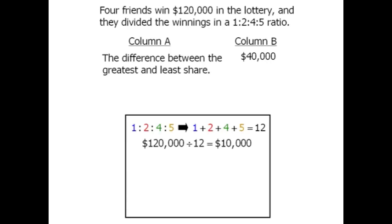So the friend that receives one share will get $10,000. The friend that receives two shares will get $20,000, and so on.